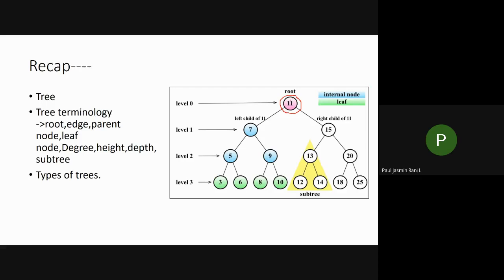An edge is used to connect two nodes. For example, 11 is one node and 7 is another node - to connect these two nodes we use an edge. An edge is used to transfer data between one node and another. A parent node is a node that has branches - at least one child. For example, node 7 has two branches, so it is called a parent node, which can also be called an internal node.